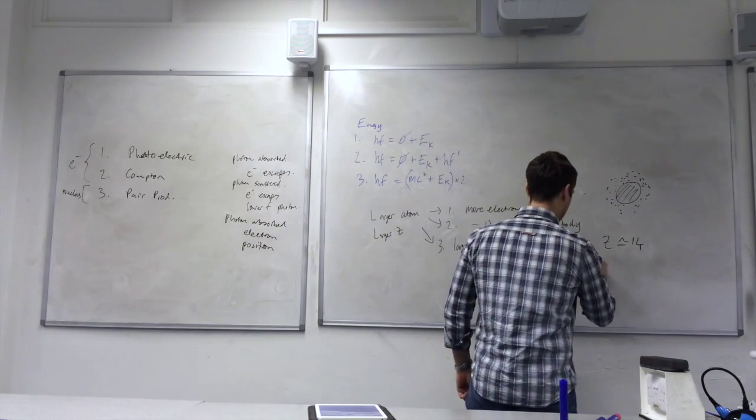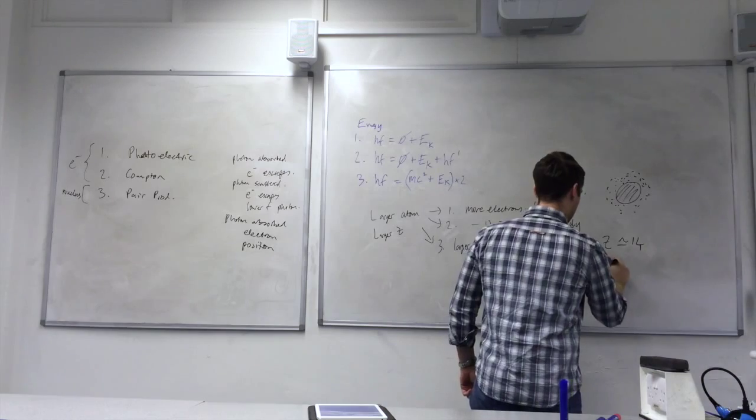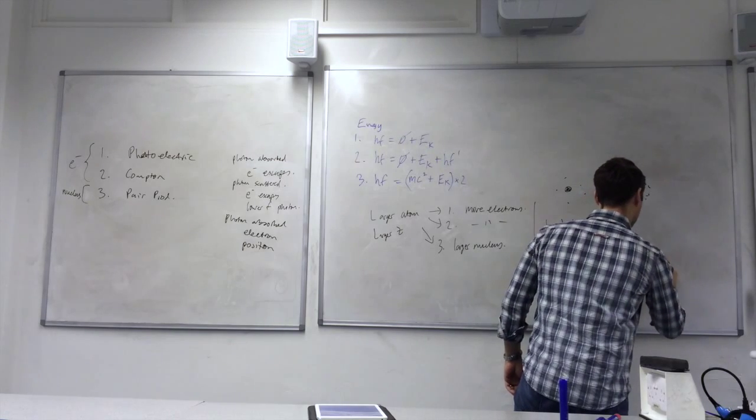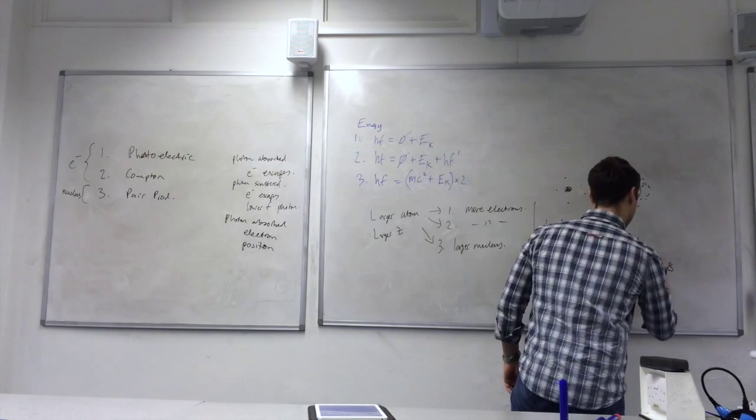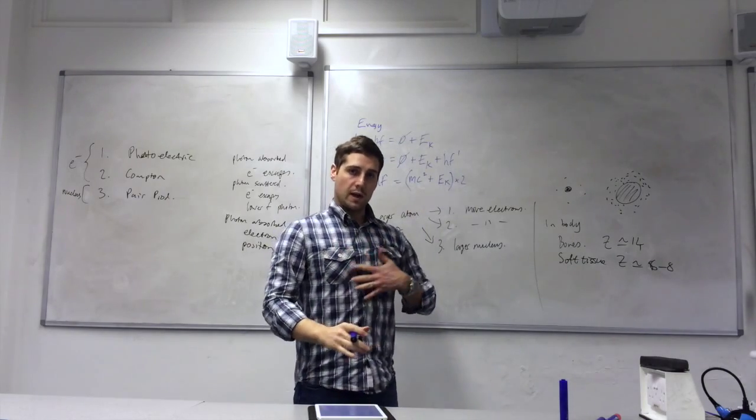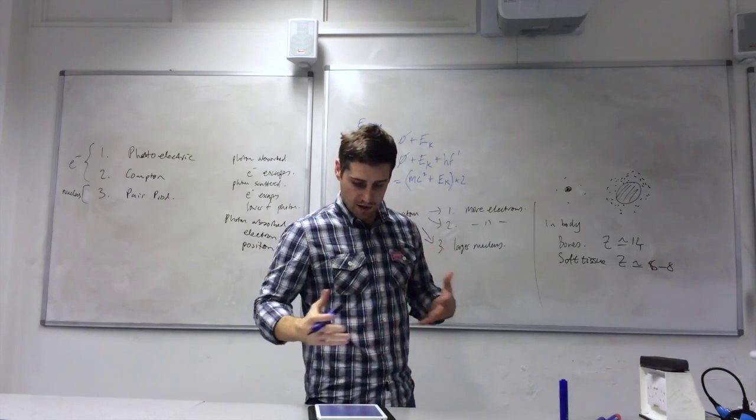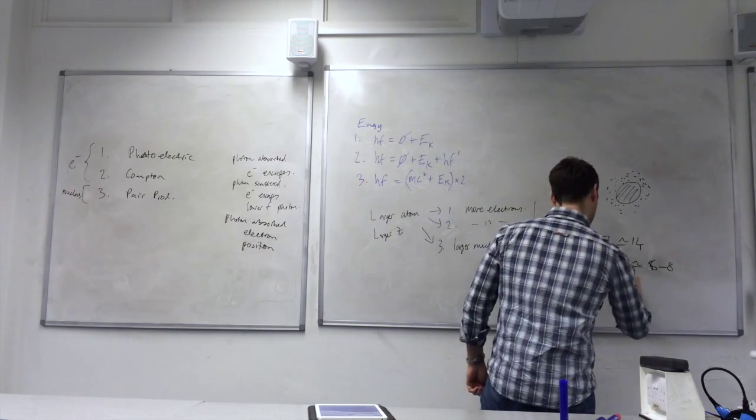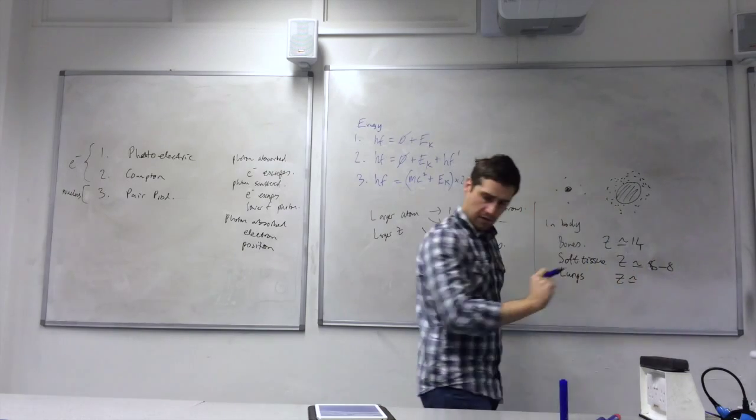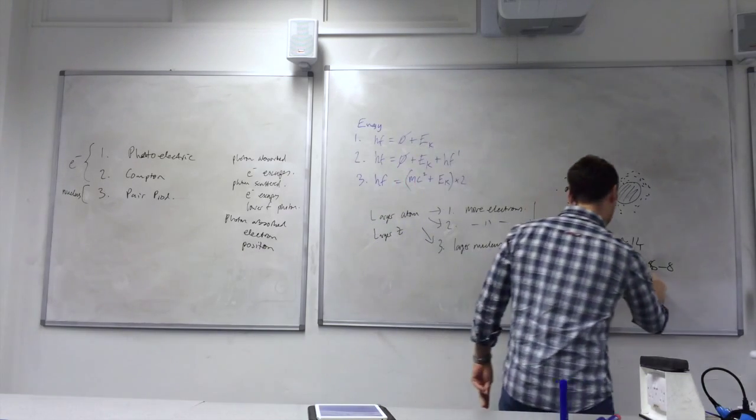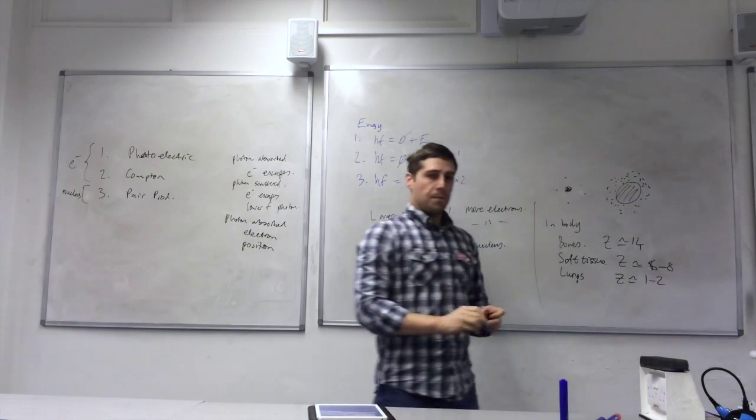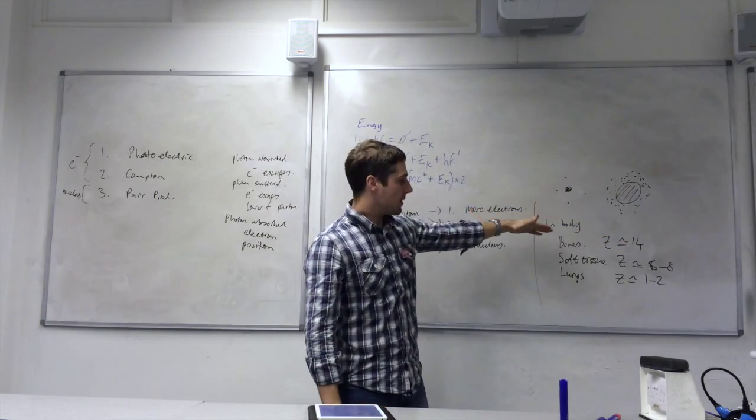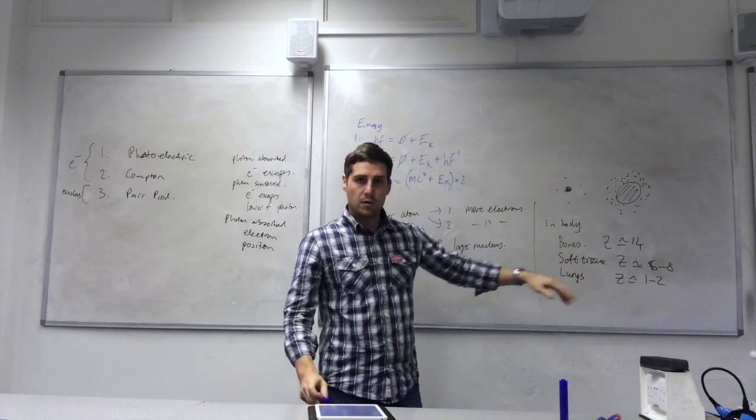So, you have soft tissue, skin, muscles, fat, a Z-number of about 6 to 8, and then, if you're looking at the chest, then you've got a lot of air there, lungs, and then, the Z-number is about 1 to 2. So, bones have a higher mean atomic number, with lungs at the bottom, the lowest.